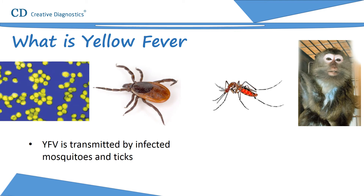Yellow fever virus is usually transmitted by infected mosquitoes and ticks. Humans are infected sporadically when bitten by sylvatic mosquitoes that previously fed on a viremic monkey — so-called jungle yellow fever — but may also serve as the viremic host for inter-human transmission, mainly by Aedes aegypti, a species that breeds in water-containing vessels inside or near dwellings, known as urban yellow fever.